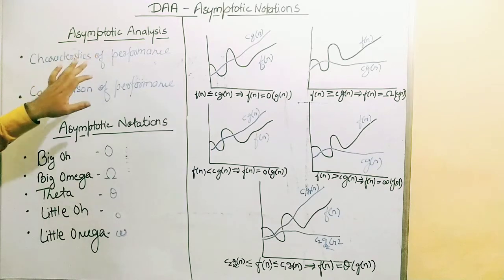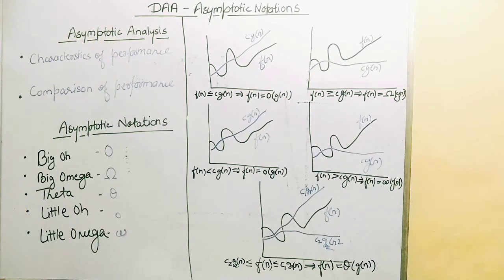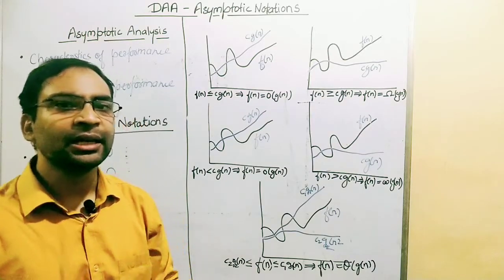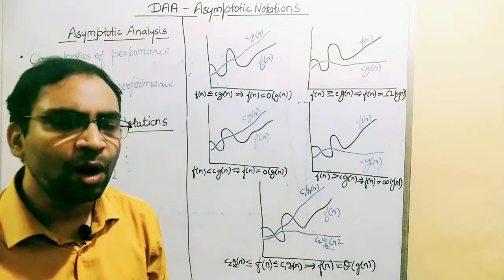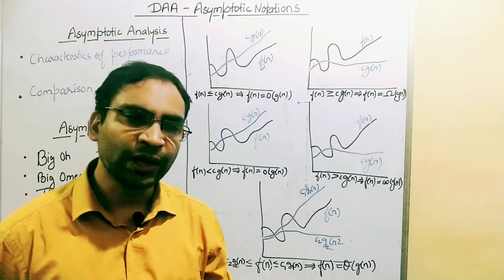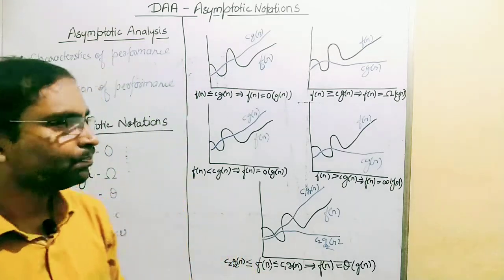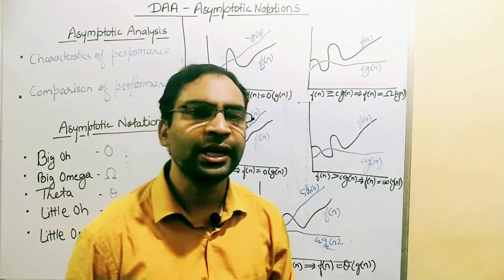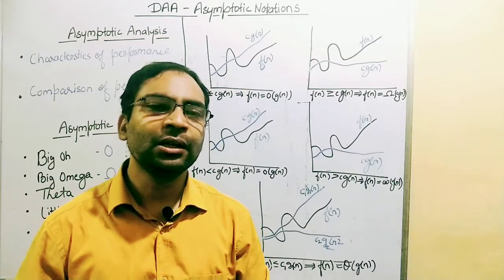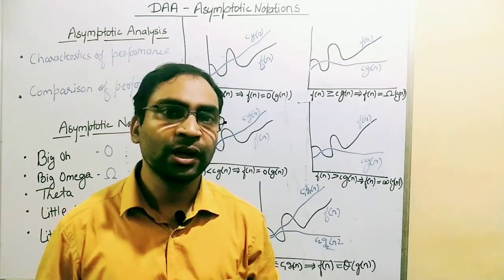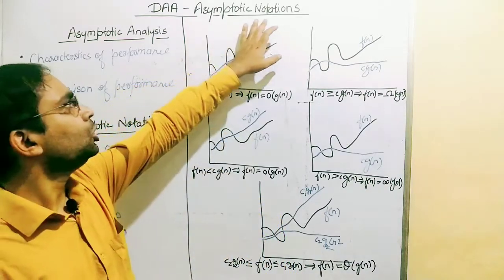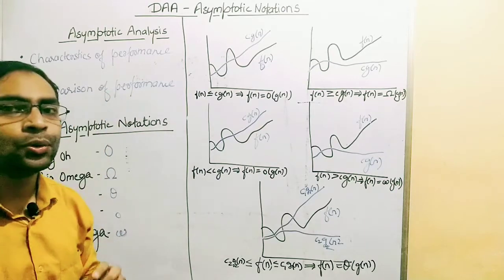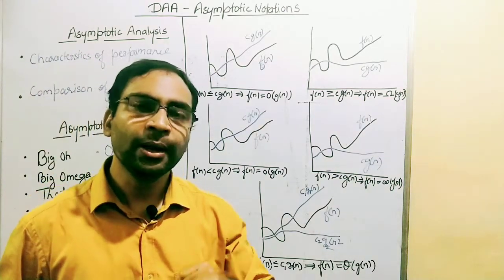As we had seen in the previous lecture, the importance of asymptotic analysis is that it gives the characteristics of performance of algorithms. It will help us in analyzing the algorithm's performance — how it is performing with different types of inputs and with the growth of the input size. It will also help us in comparing the performances of algorithms. For a problem like sorting, we have lots of algorithms, and asymptotic analysis helps us identify which algorithm is performing best for which input size or input type.